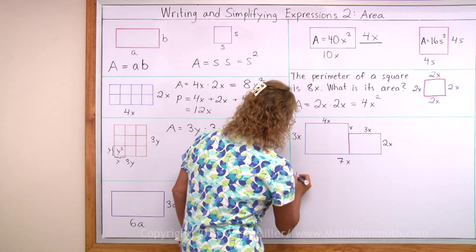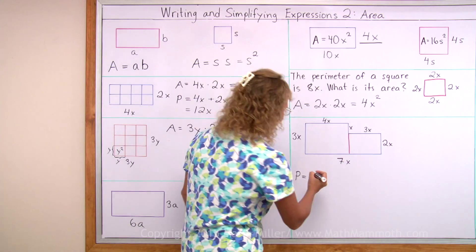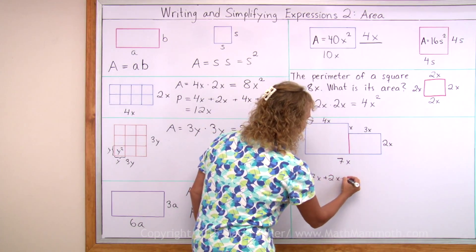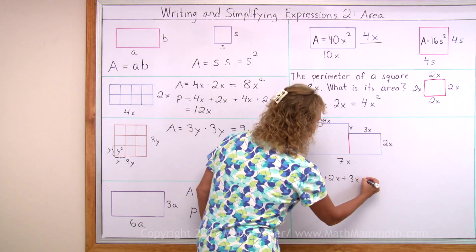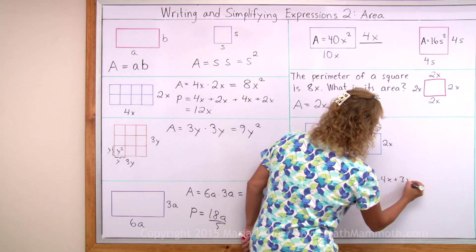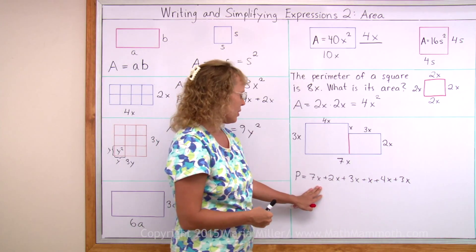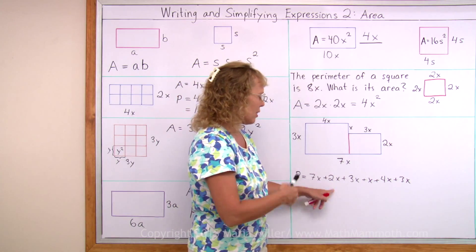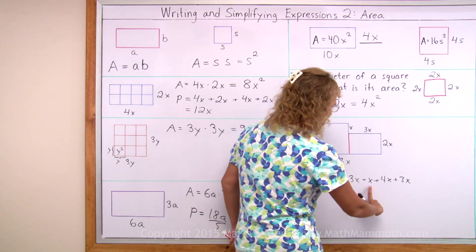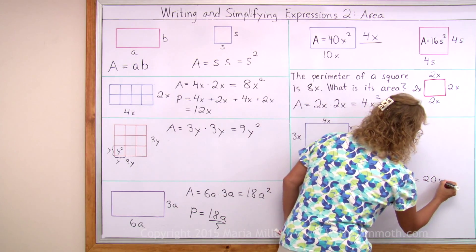Let's take the perimeter first. You go all the way around and add. Starting here for example. 7x add 2x add 3x add x and 4x and 3x. Here in addition you can add these different terms just by adding the numbers. And then it will be that many times x. So we have 9, 12, 13, 17, 20. The perimeter is 20x.